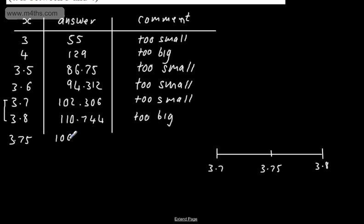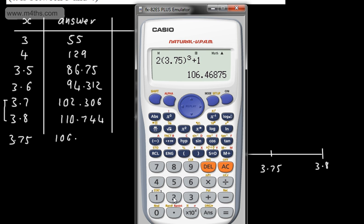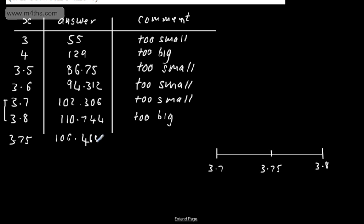Let's write this in. So I've tried now the midpoint of the two. So we get 106 point, and just jotting this down, 4, 6, 8, 7, 5. So 4, 6, 8, 7, 5.